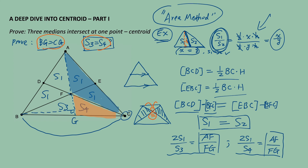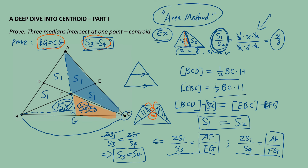So 2S1 over S3 equals 2S1 over S4, and 2S1 cancels, giving us S3 equals S4. What does that mean? Since S3 equals S4 for these two triangles, and they share a common altitude, BG must equal CG. Therefore G is the midpoint, and AFG is the third median, which also passes through point F. The intersection point of the three medians is called the centroid. The centroid divides each median into two parts, and the ratio of those two parts is 2 to 1.